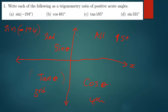We have negative 194. Here we have zero degrees, 90 degrees, 180 degrees, and 270 degrees. Measuring this angle, we know that this is 194. So if this is 194, it means we're going to measure starting from this point going this side. When we reach this point we have reached 180 degrees, so 194 will be somewhere just past there.